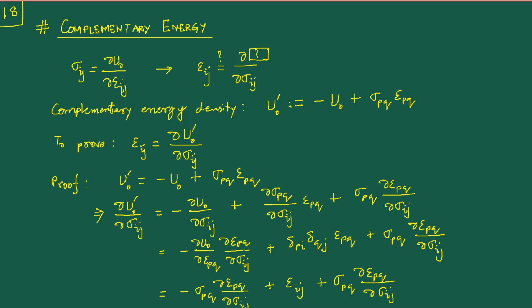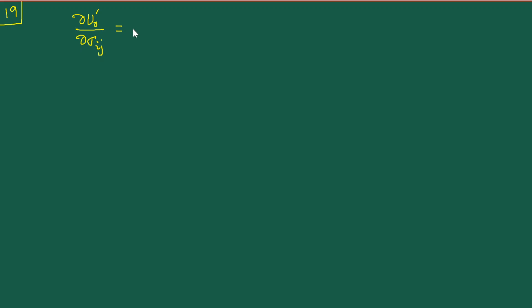After the Kronecker delta substitution, p gets replaced by i and q gets replaced by j, giving ε_ij. You can see that the first term cancels the last term, so overall ∂u⁰'/∂σ_ij equals ε_ij — which is exactly what we had to prove.